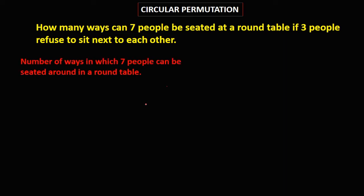First, we need to compute the total number of ways in which these 7 people can be seated around in a round table. Since this one is an example of circular permutation, using the formula (n-1)!, and in the given n is equal to 7, so (7-1)! equals 6!.